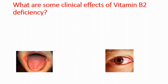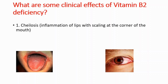Now we can talk about clinical effects of vitamin B2 deficiency. We have two things specifically seen in vitamin B2 deficiency. The first one is cheilosis, which is inflammation of the lips with scaling at the corner of the mouth. You can see from the first picture — this is cheilosis, the scaling at the corner of the mouth.